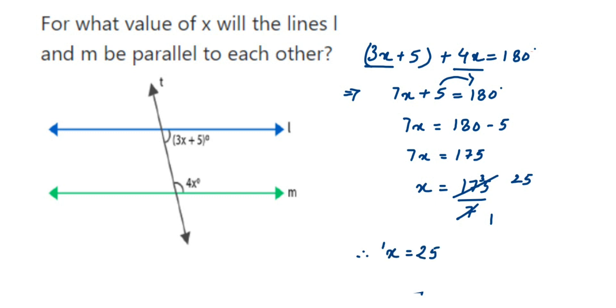So x equals 25 is the answer. If x is equal to 25, then we can say that these two lines will be parallel to each other. That's what they're asking in the question - the value of x is 25.